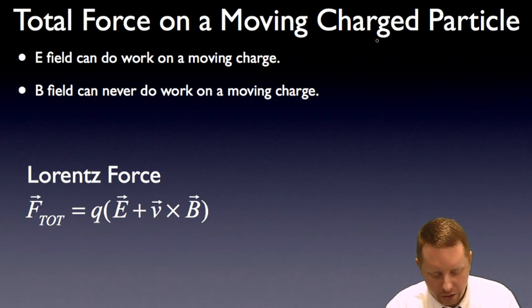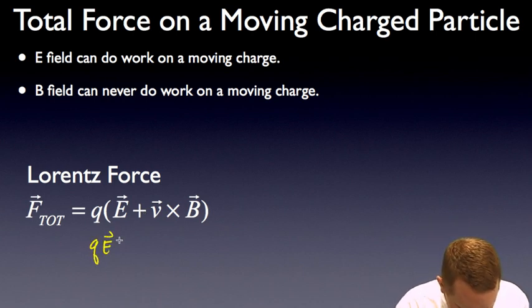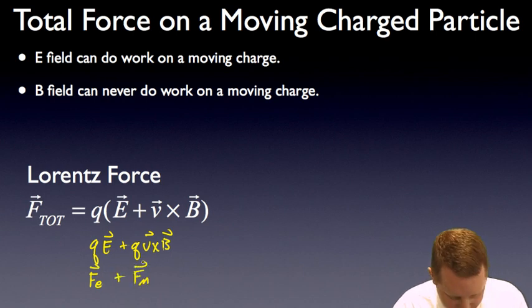So, the total force on a moving charge particle, well, the electric field can do work on a moving charge. The magnetic field can never do work on a moving charge, but you get both of these forces when you have a moving charge. So, we call that total force the Lorentz force, where the total force is equal to q times the electric field. Remember, qe is the electric force plus v cross b. Or you could expand that out to say that that's qe plus qv cross b, where this is the electric force and this is the magnetic force. It's known as the Lorentz force when we put them together.